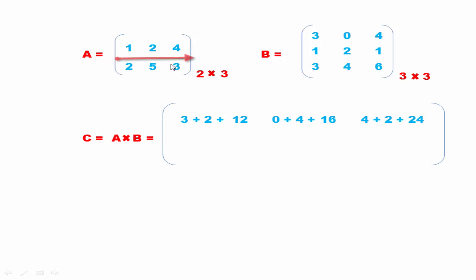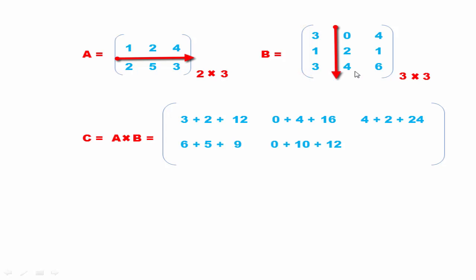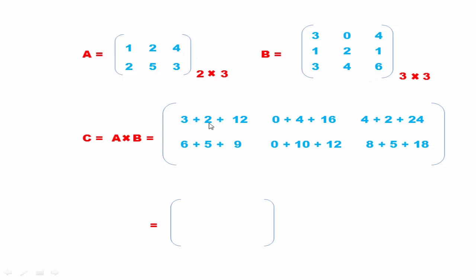Next we multiply the second row with this column: two into three is six, plus five into one is five, plus three into three is nine. Similarly we multiply remaining row-column combinations. Now we add the numbers: three plus two is five, five plus twelve is seventeen. Zero plus four is four, four plus sixteen is twenty. Similarly we add all the remaining numbers.